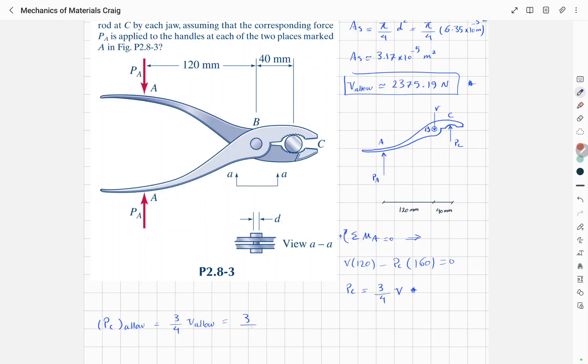Which is 3 over 4 times 2375.19 newtons. So Pc allowable will be 1781.39 newtons.